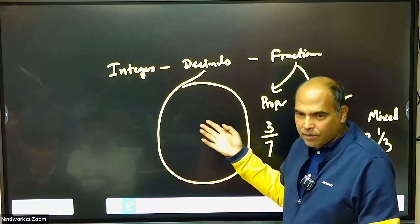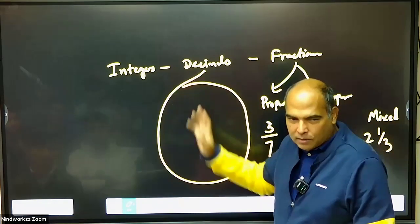So integer can be positive or negative. Decimal is something which happens after a decimal point inside a value.